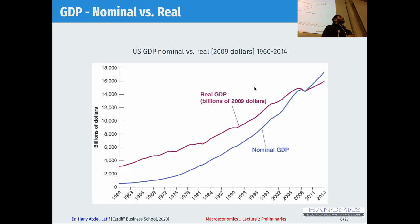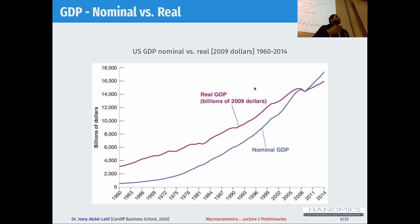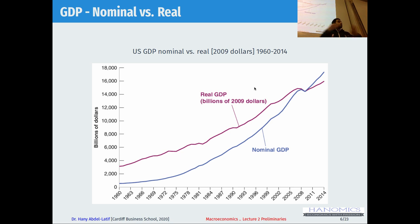After 2009, real GDP falls below nominal GDP because prices increase over time. So if I used 2005 prices to calculate real GDP, these two lines would instead cross at 2005. The intersection point depends on whatever base year prices you choose.